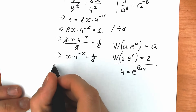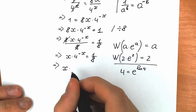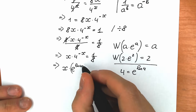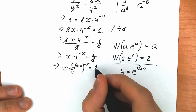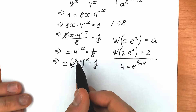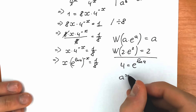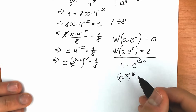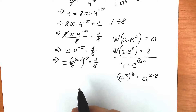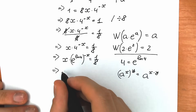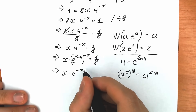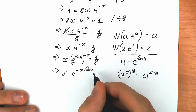Let's write e to the power natural log 4 in place of 4. So we have x times e to the power natural log 4, raised to the power minus x, equal to 1 over 8. Using the rule that a to the power x raised to the power y equals a to the power x times y, we multiply natural log 4 by minus x, giving us x times e to the power minus x times natural log 4, equal to 1 over 8.